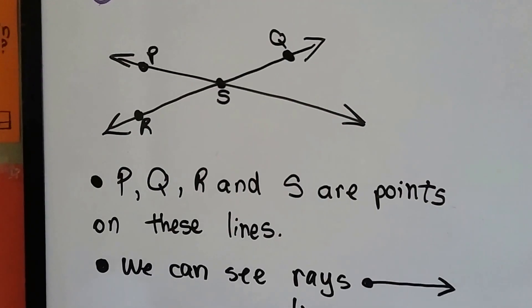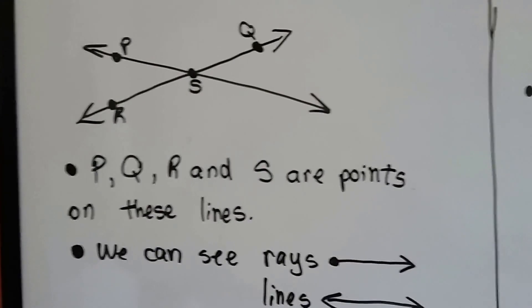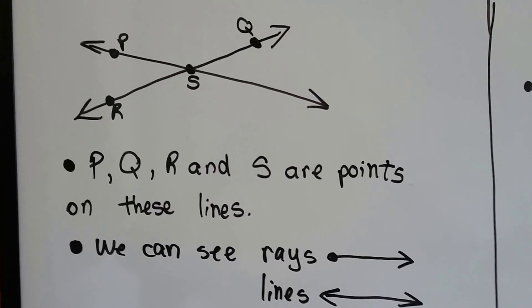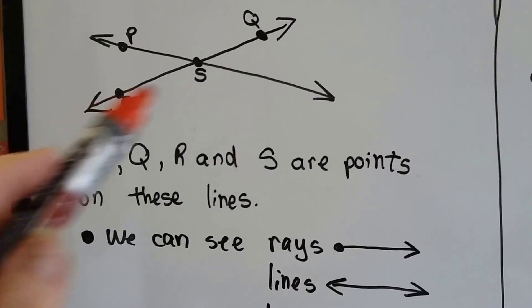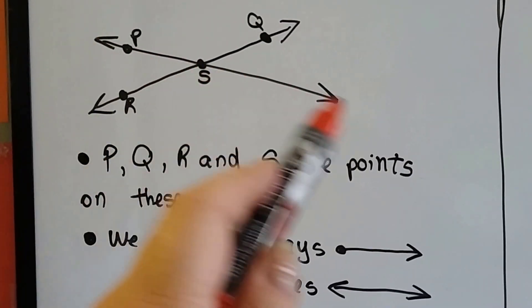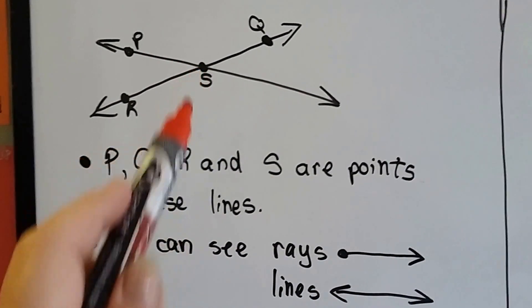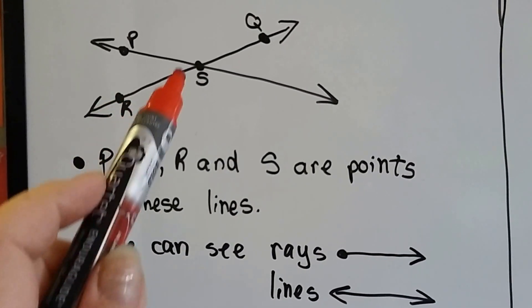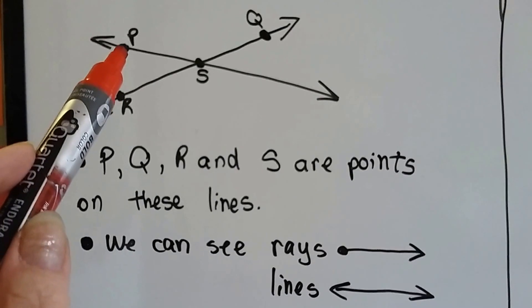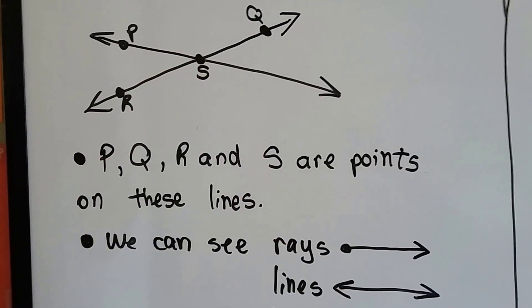If you remember from fifth grade, we did angles, and we did points, and we showed you where the vertex was. So a little review real quick. We have two lines crossing each other, and they cross at point S, and on the lines, on this line, we have point R, S, Q, and on this line, we have points P, S. See that?